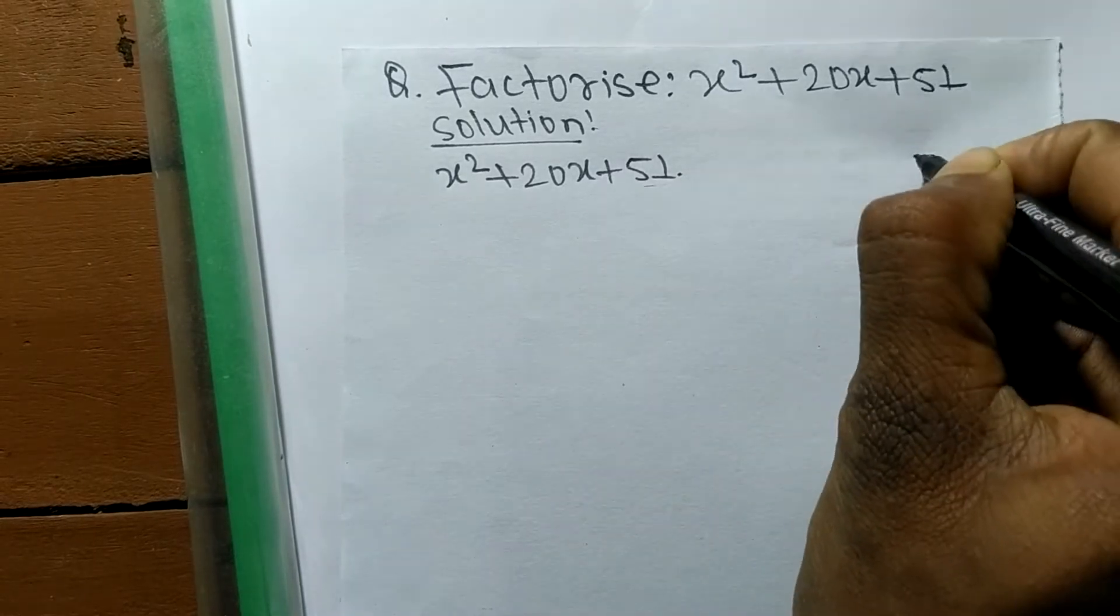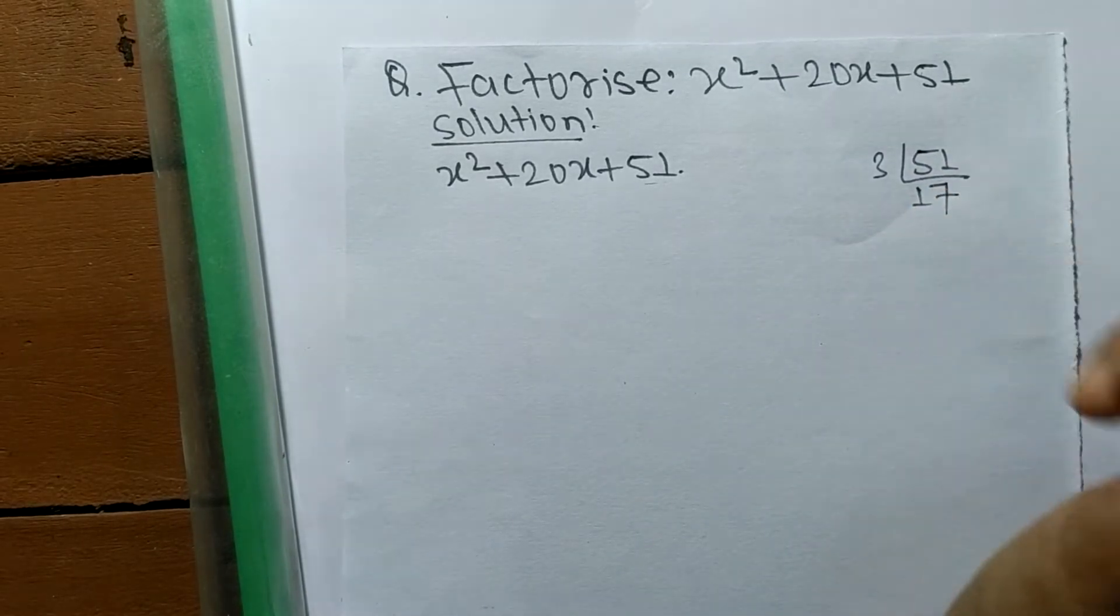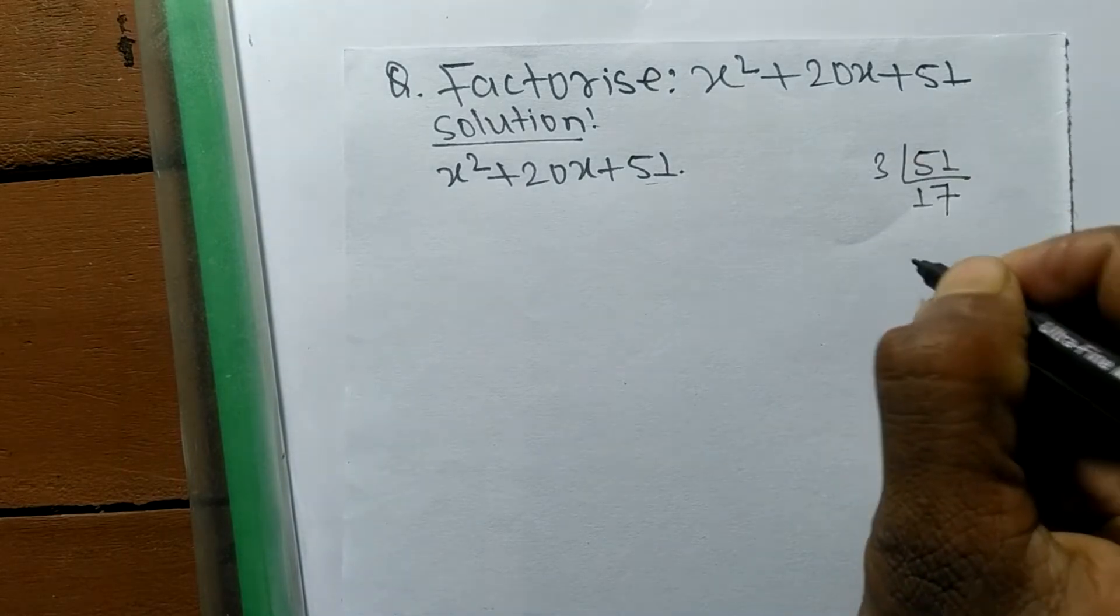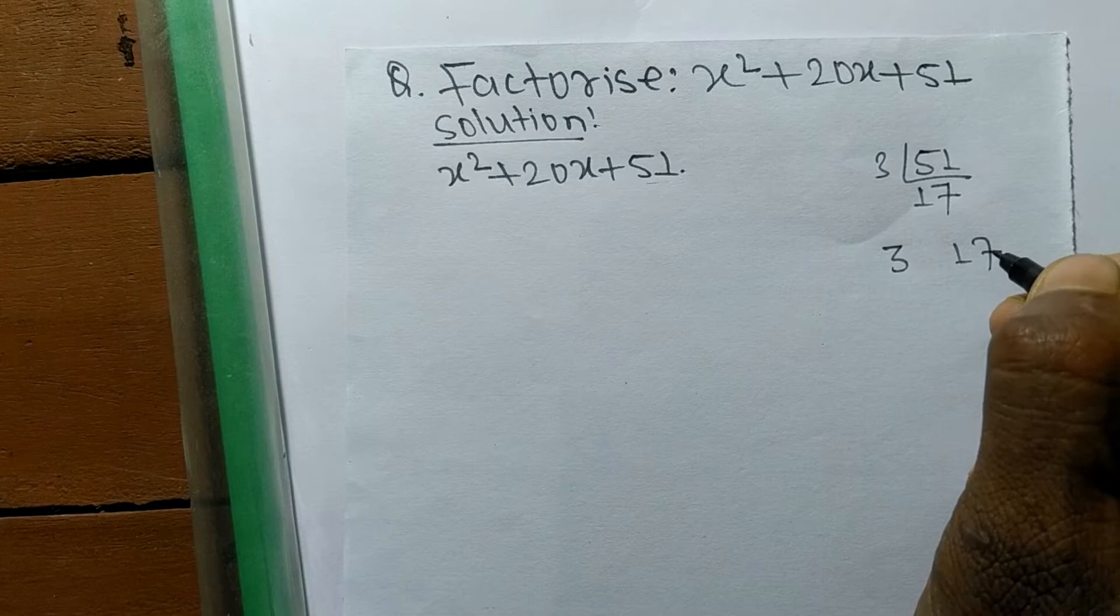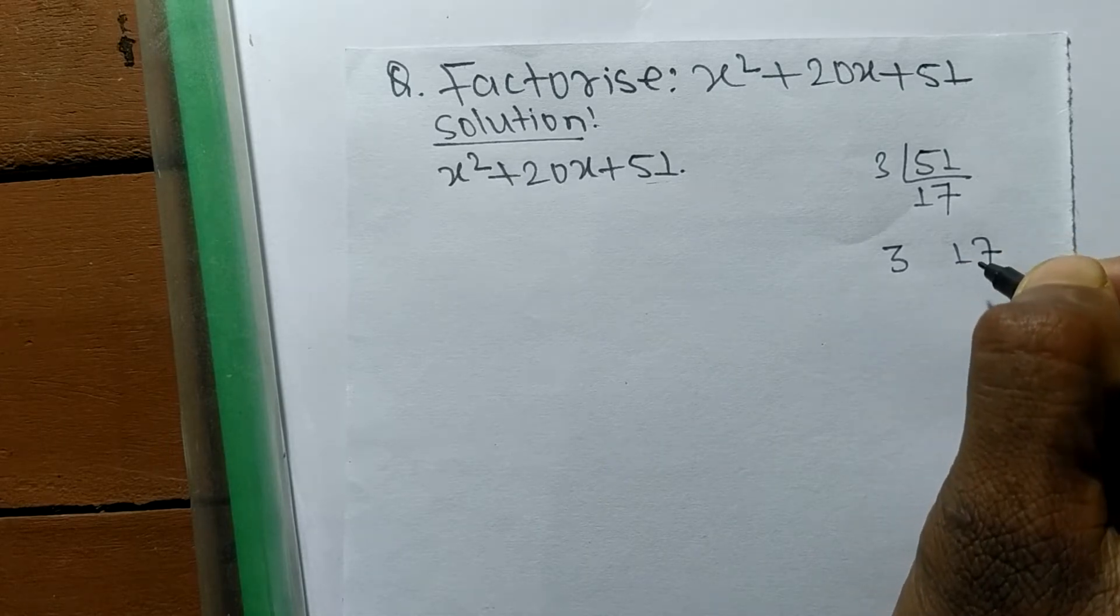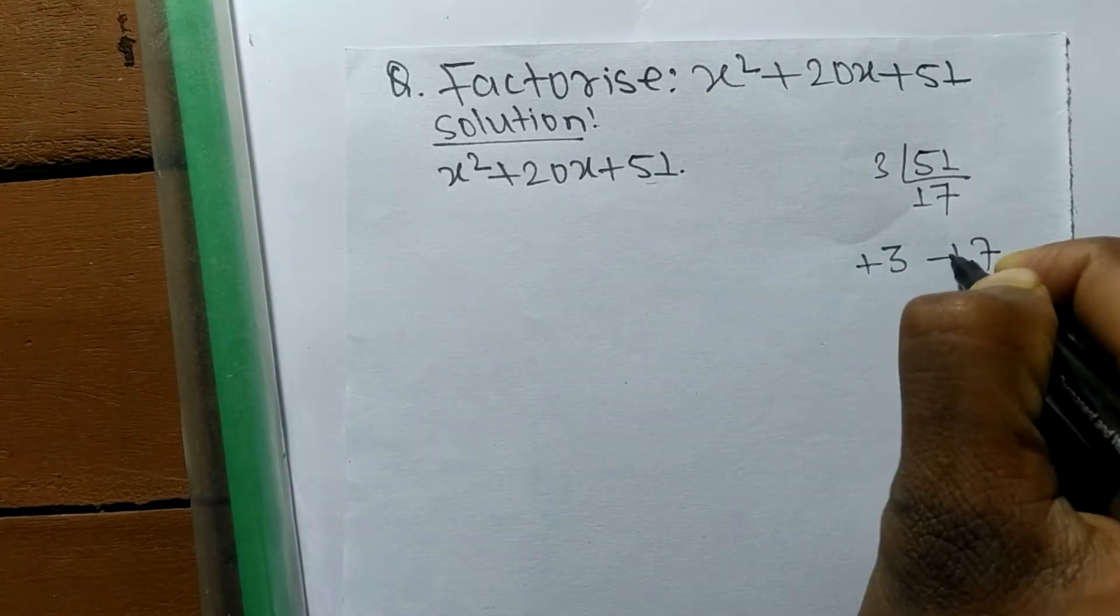51 is 3 times 17. So we got the numbers 3 and 17. From these both numbers by adding we have to get 20, so it is 3 plus 17.